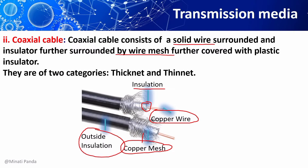The two most commonly used types of coaxial cable are thicknet and thinnet. Thicknet is thicker than thinnet and its cable segments can be up to 500 meters long. Thinnet is thinner and can have a maximum segment length of 185 meters.